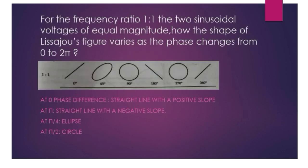If the frequency ratio is one is to one and both sinusoidal voltages have equal magnitude, then how does the shape of Lissajous figure change with a variation in phase difference from zero to two pi? At zero degree, we get a straight line.